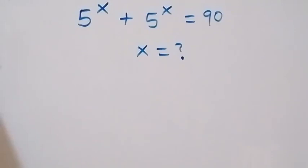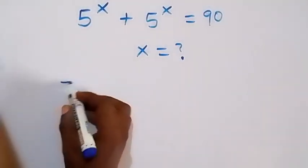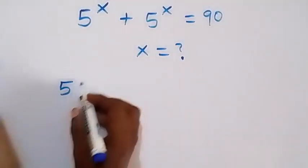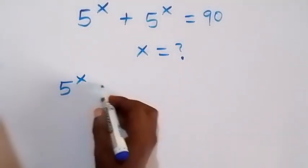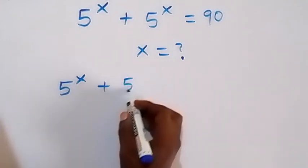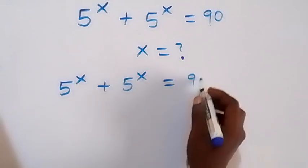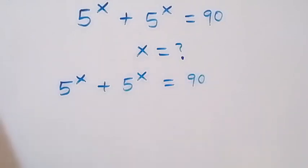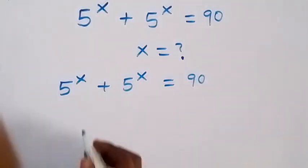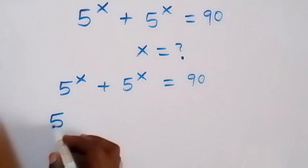Hello, you are welcome here. How to solve for x in this exponential equation: 5 raised to power x plus 5 raised to power x equals 90.